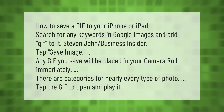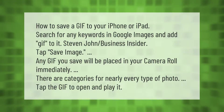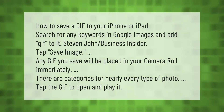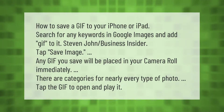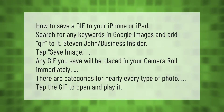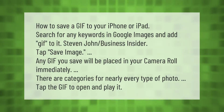How to save a GIF to your iPhone or iPad: search for any keywords in Google Images and add 'GIF' to it. Tap 'Save Image.' Any GIF you save will be placed in your camera roll immediately. There are categories for nearly every type of photo. Tap the GIF to open and play it.